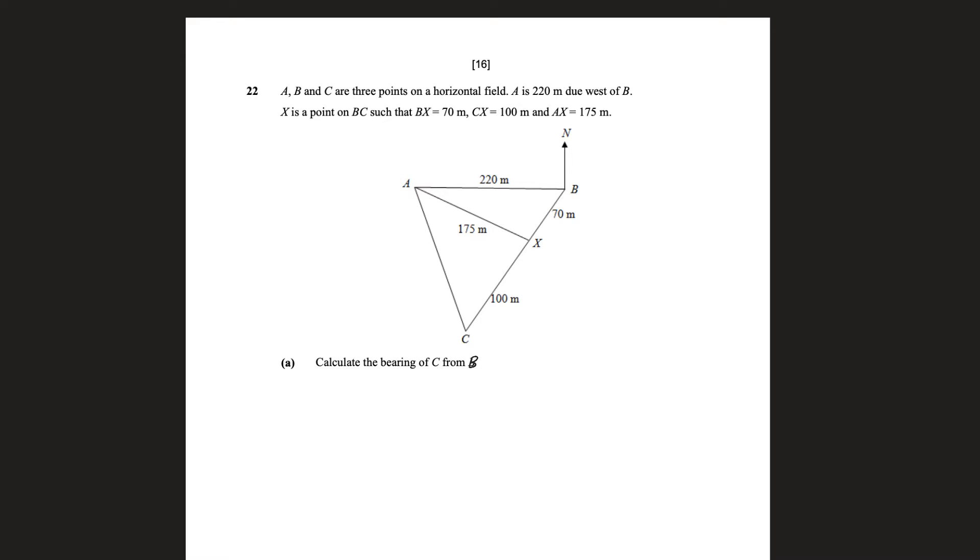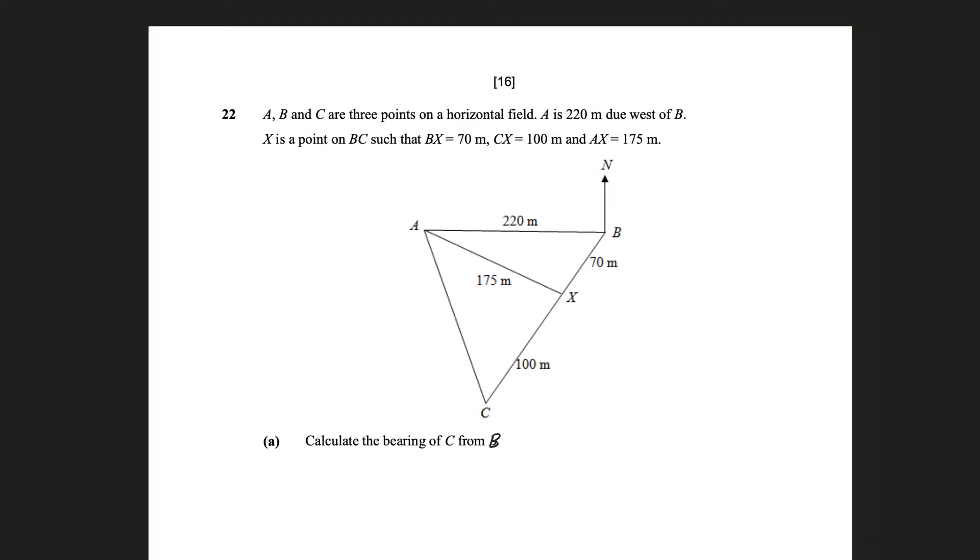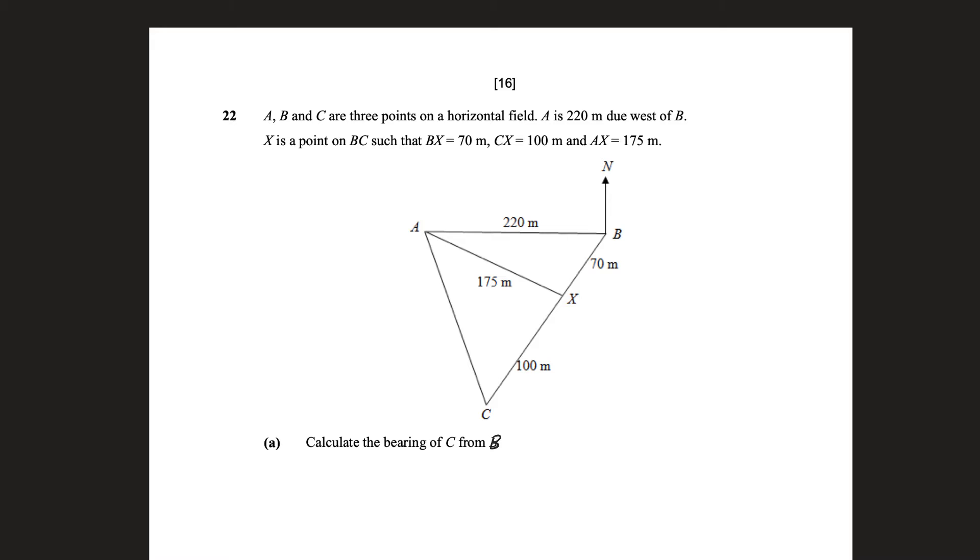Alright, bearings question. A, B, and C are three points on a horizontal field. A is 220 meters due west of B. So north, south, east, west, so due west of B.